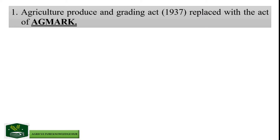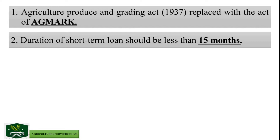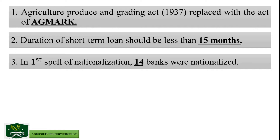Agriculture Produce and Grading Act 1937 was replaced with the Act of Agmark. Question number 2: Duration of short-term loan should be less than 15 months. Question 3: In the first phase of nationalization, 14 banks were nationalized.